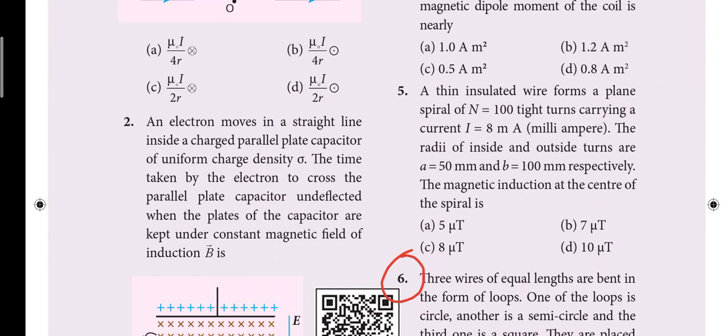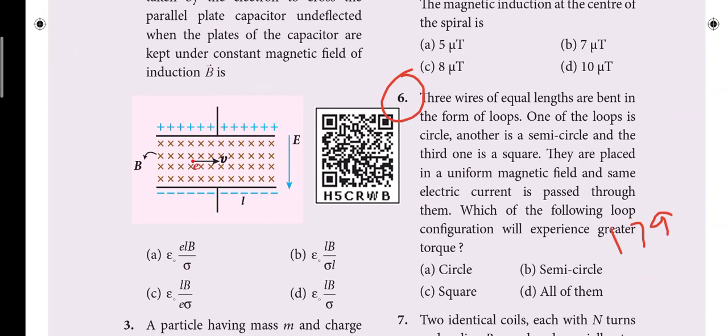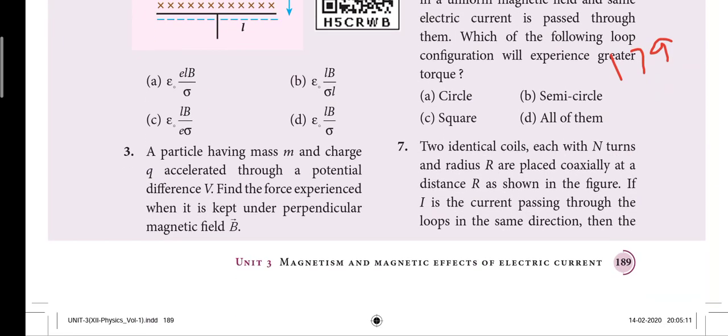Next third lesson, magnetic effect of electric current. Sixth one word, three wires of equivalent are bending in loops. One of the loops is semicircle. So that's RQH, correct? So that's 179 page. That's the one word reduced to one word.